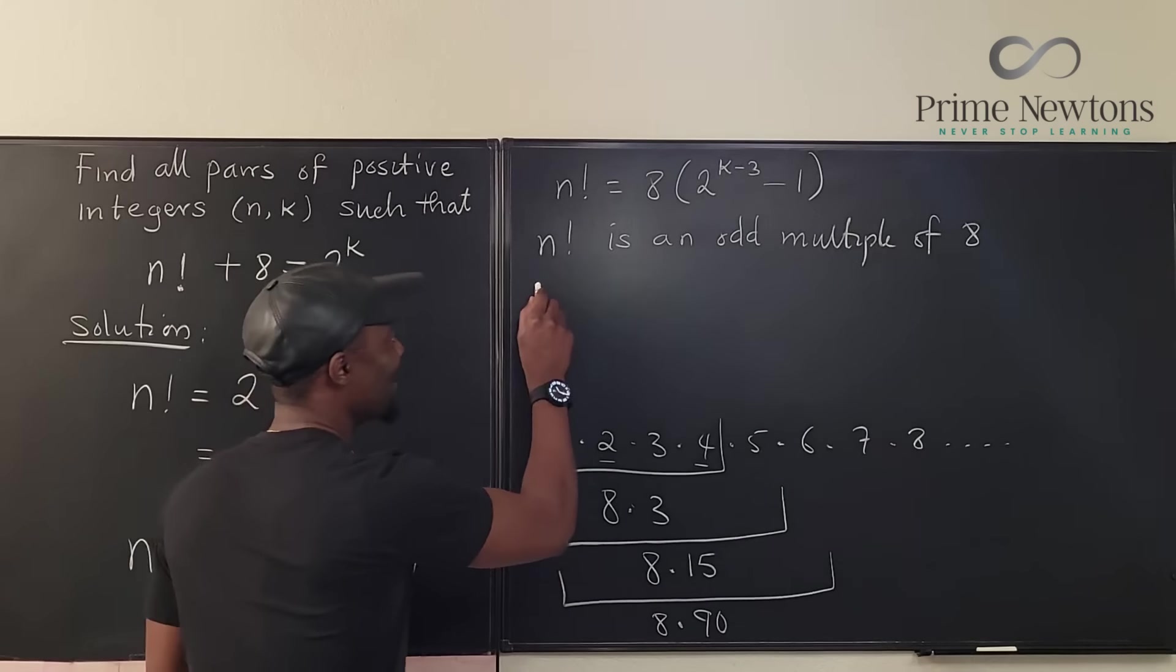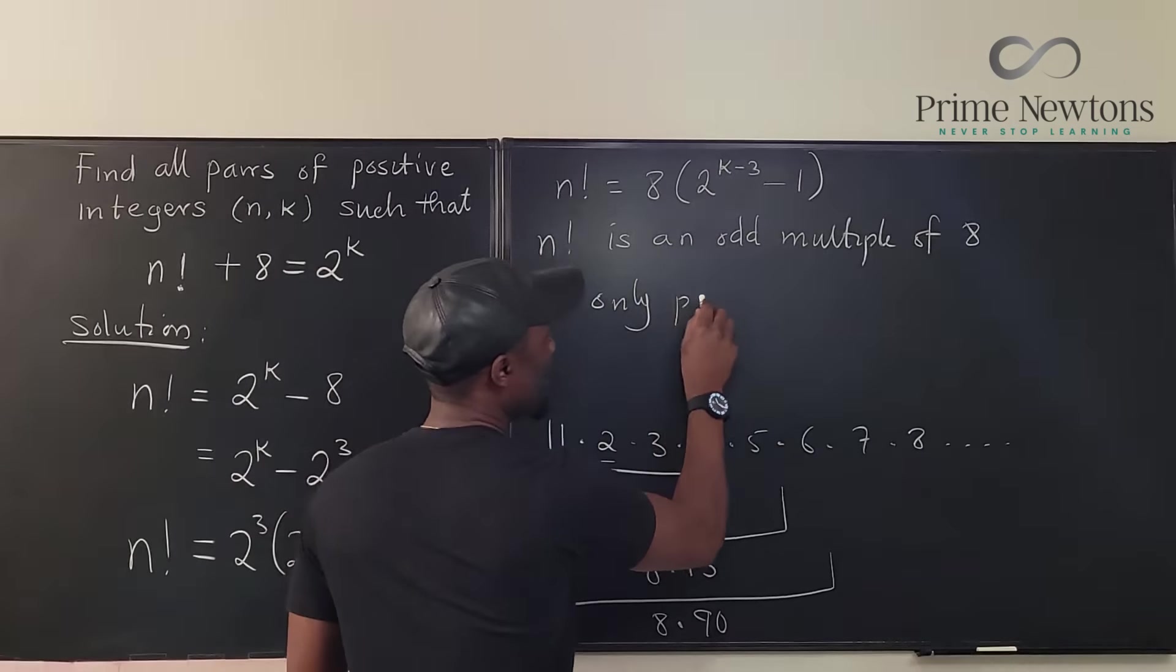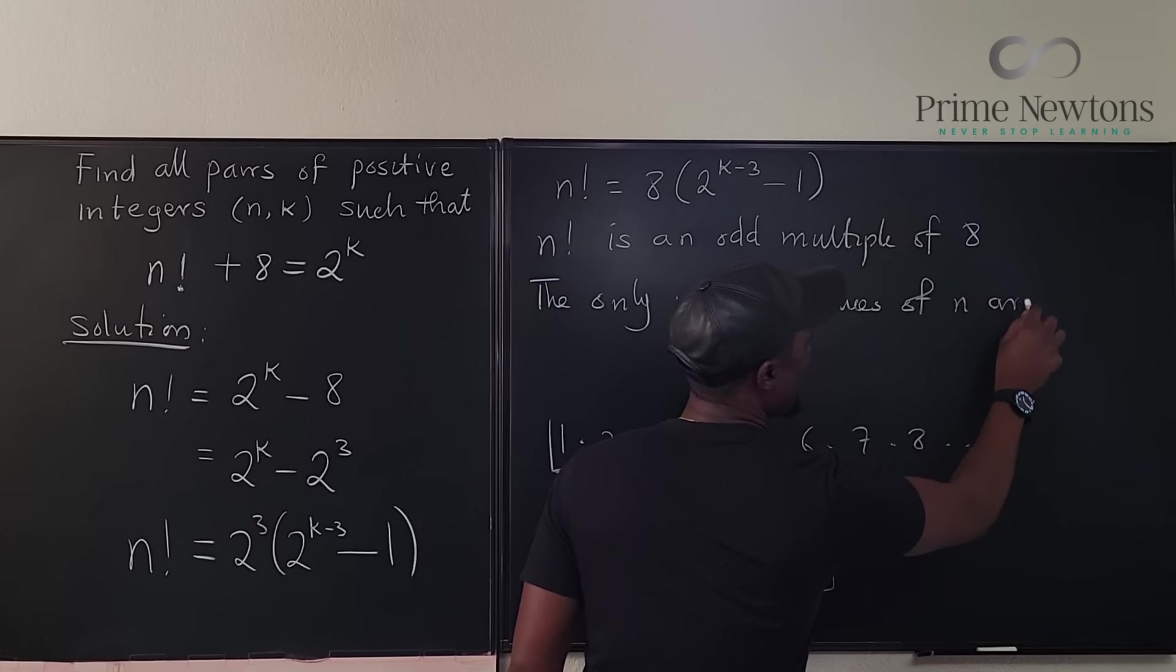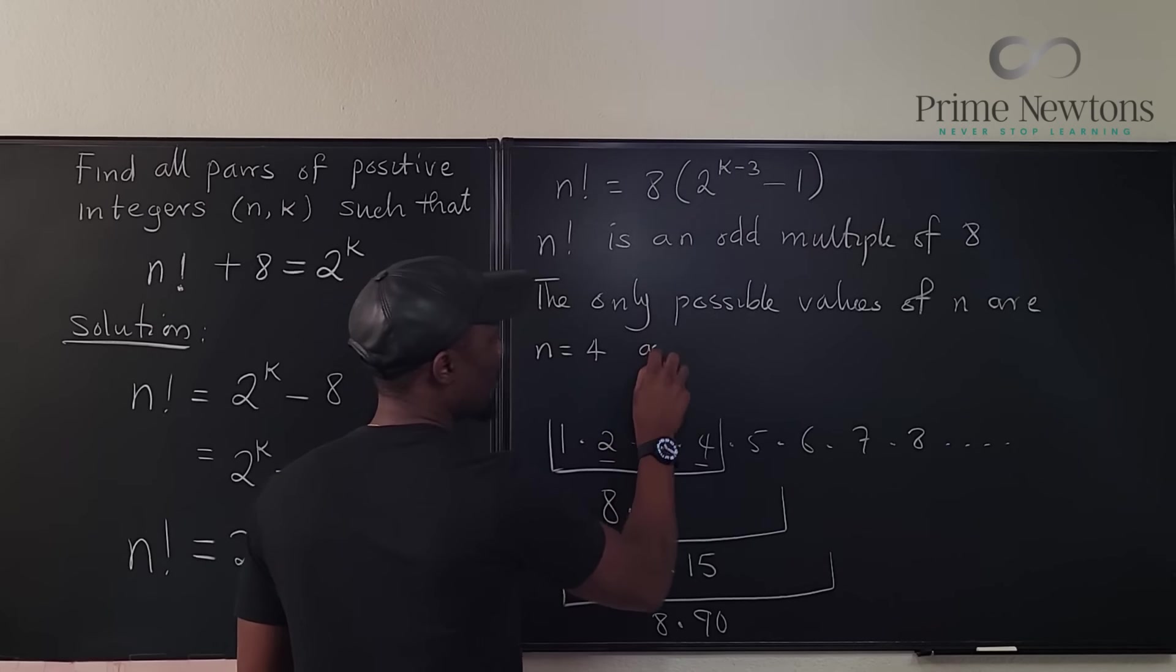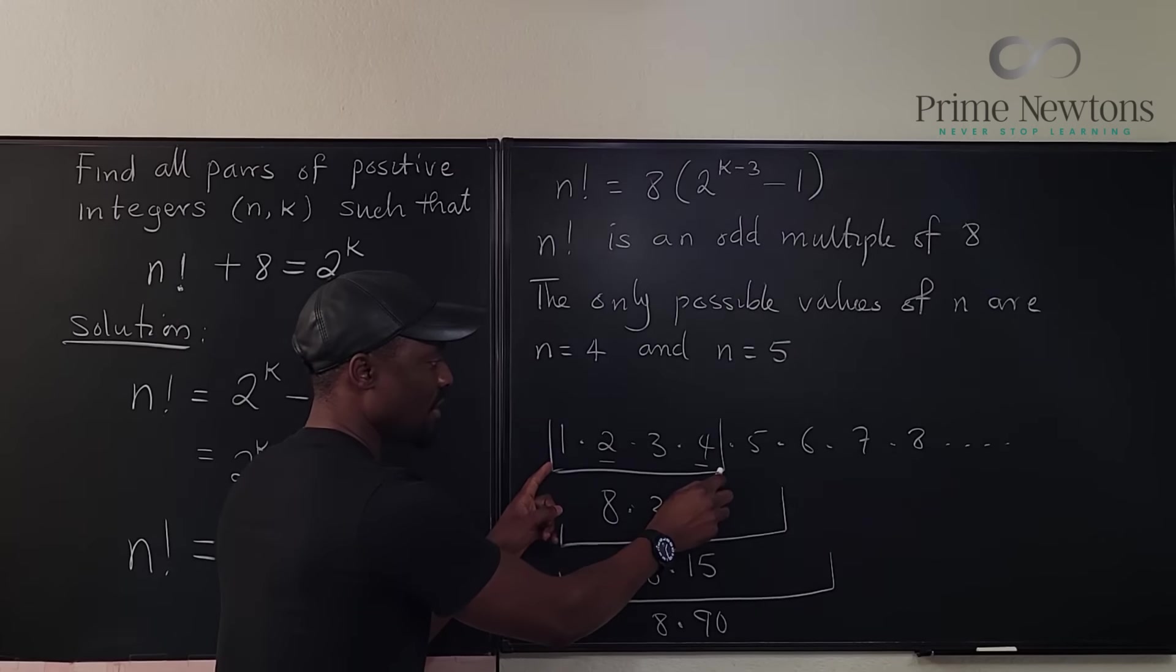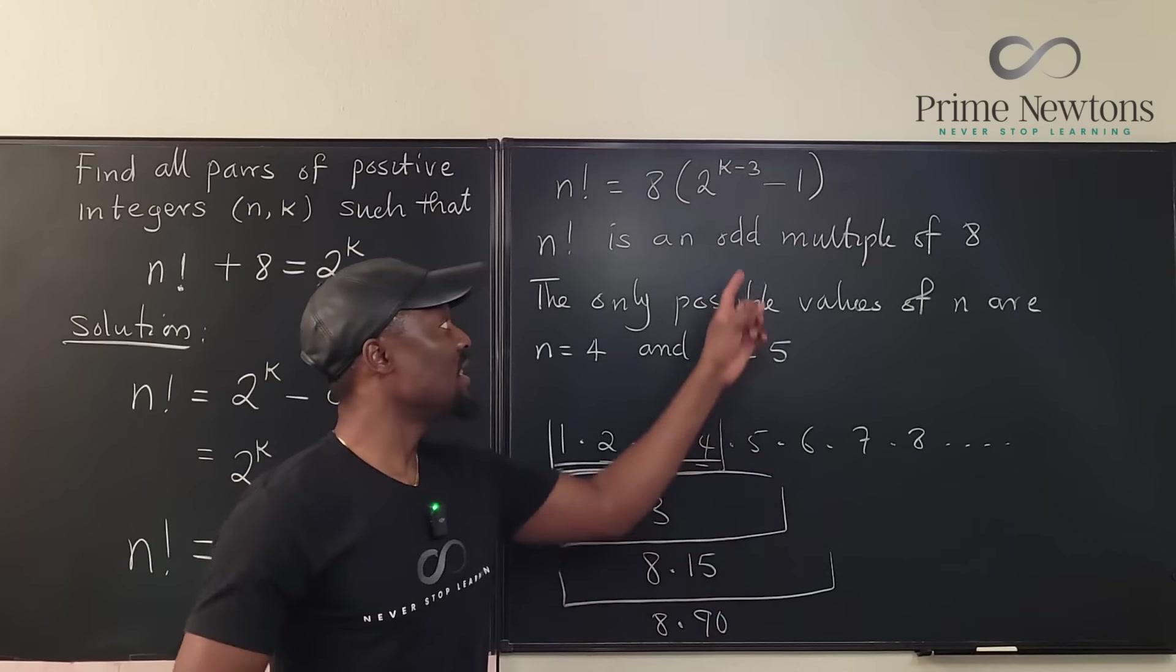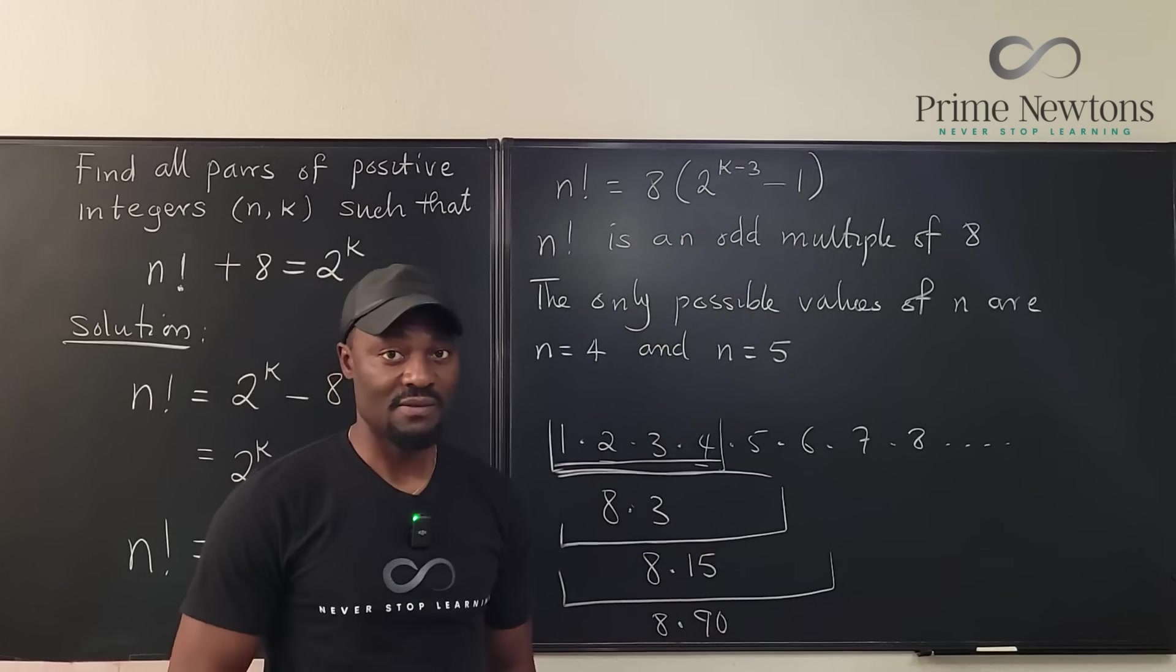So we can say the only possible values of n are n equals 4 and n equals 5. You stop here or you stop here, so it's either 4 factorial or 5 factorial. Anything else you try is not going to satisfy the condition of odd multiple of 8.